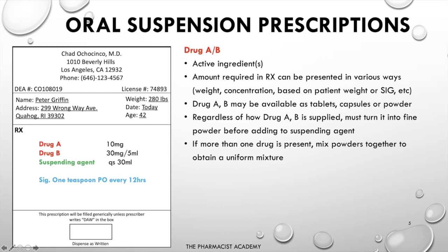The amount can be presented in various ways. They may give it as a weight — for example, 325 mg of Tylenol — as a concentration, such as 25 mg per 5 mL, or based on the patient's weight, such as 2 mg/kg. Regardless of how Drug A or B is supplied — tablets, capsules, or powder — you must turn it into a powder before adding the suspending agent. If more than one drug is presented, mix the powders together to obtain a uniform mixture before adding the suspending agent.